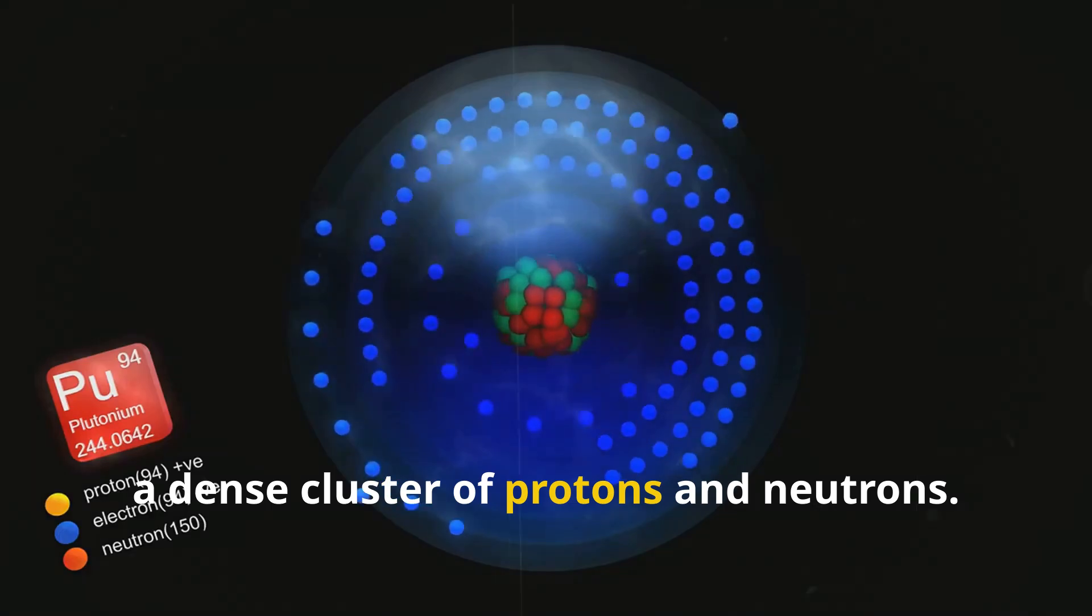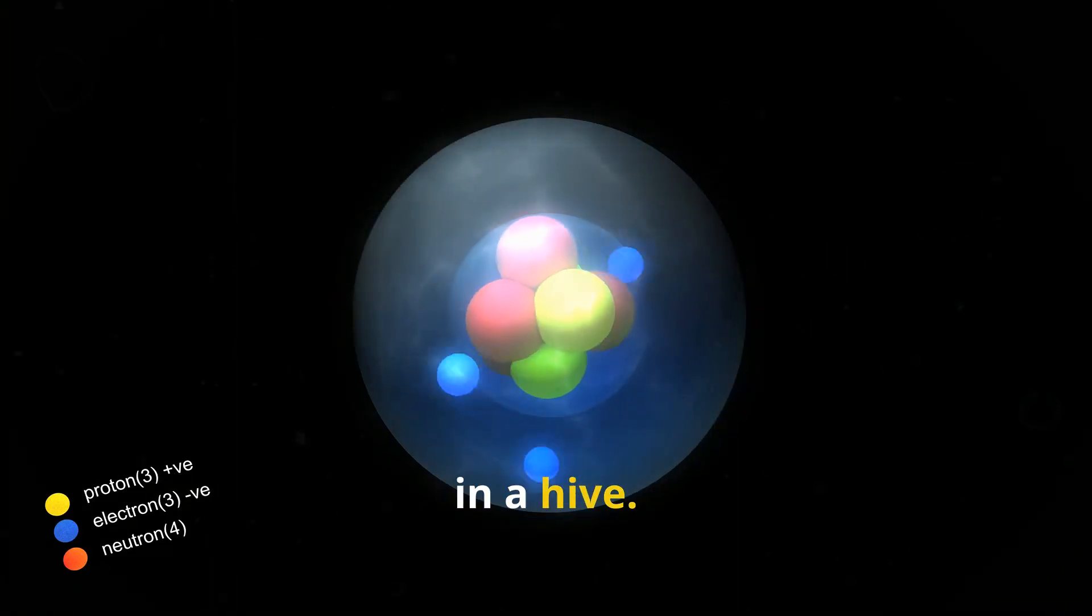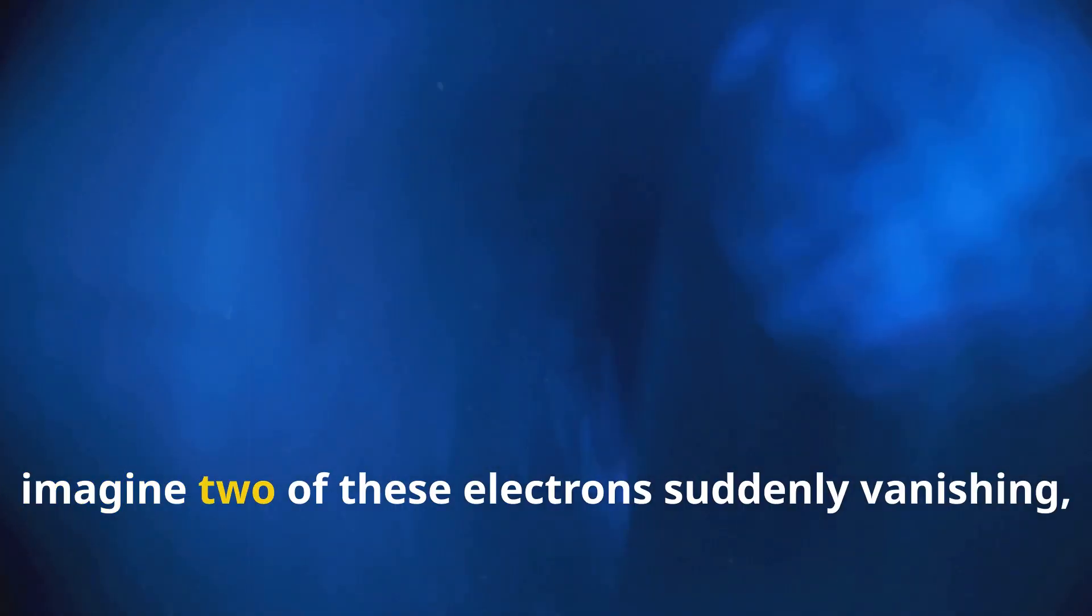Imagine an atom as a miniature solar system. At its centre lies the nucleus, a dense cluster of protons and neutrons. Orbiting this nucleus are electrons, tiny particles buzzing around like bees in a hive. Now imagine two of these electrons suddenly vanishing, as if by magic. That's essentially what happens when xenon-124 decays.